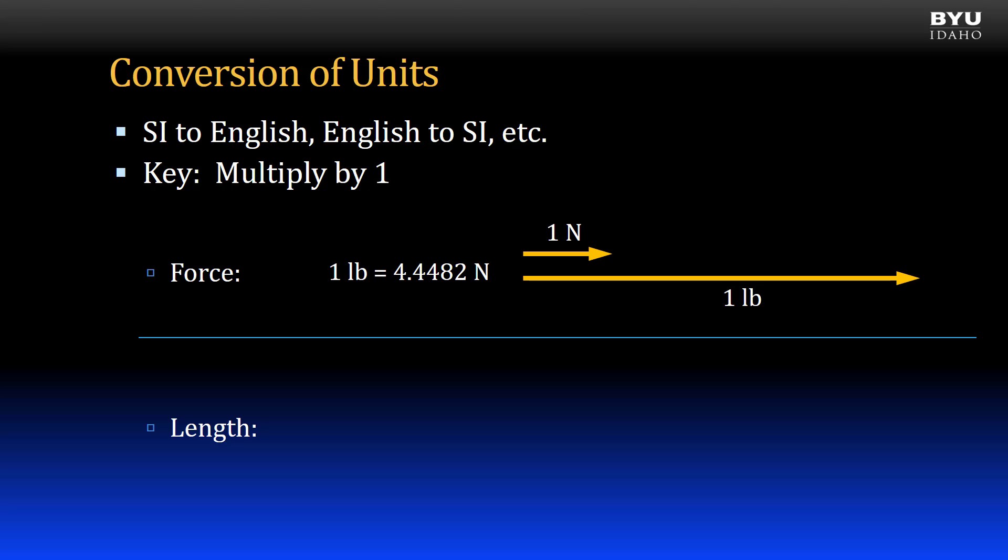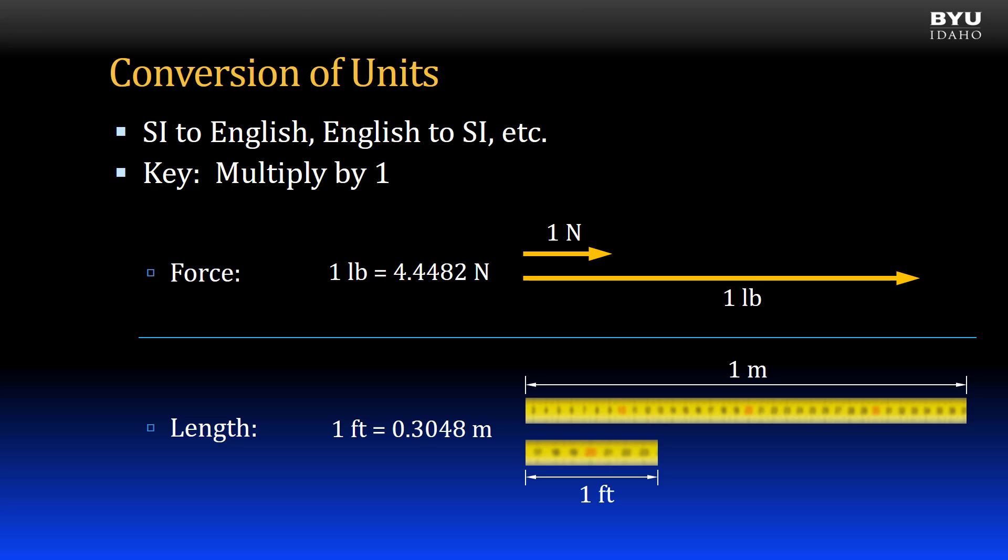When converting a length measurement, a common conversion factor is one foot is equal to 0.3048 meters, or one inch equals 2.54 centimeters. A lot of your calculators have these units of conversion built in, and there are many of them. But the key to doing the conversions is to use the same procedure, and that is multiplying by one.